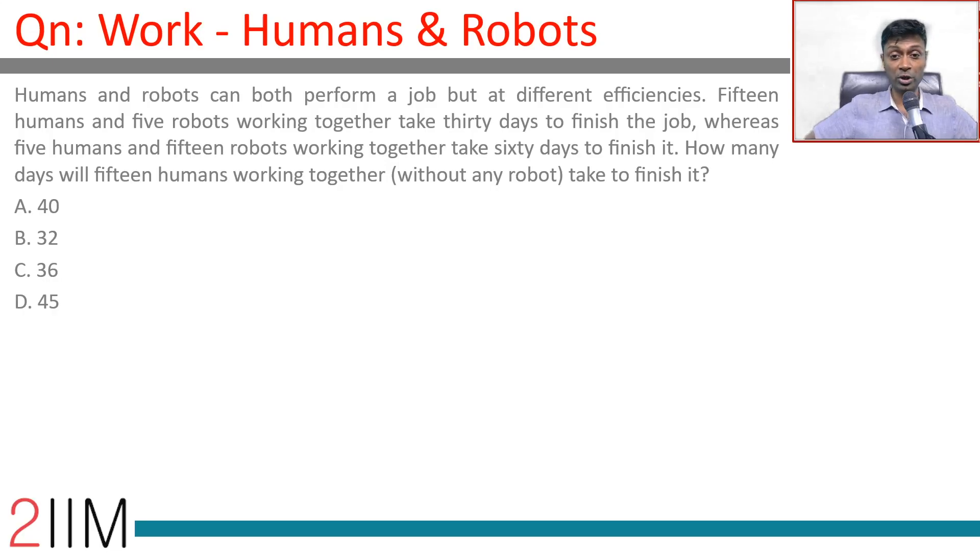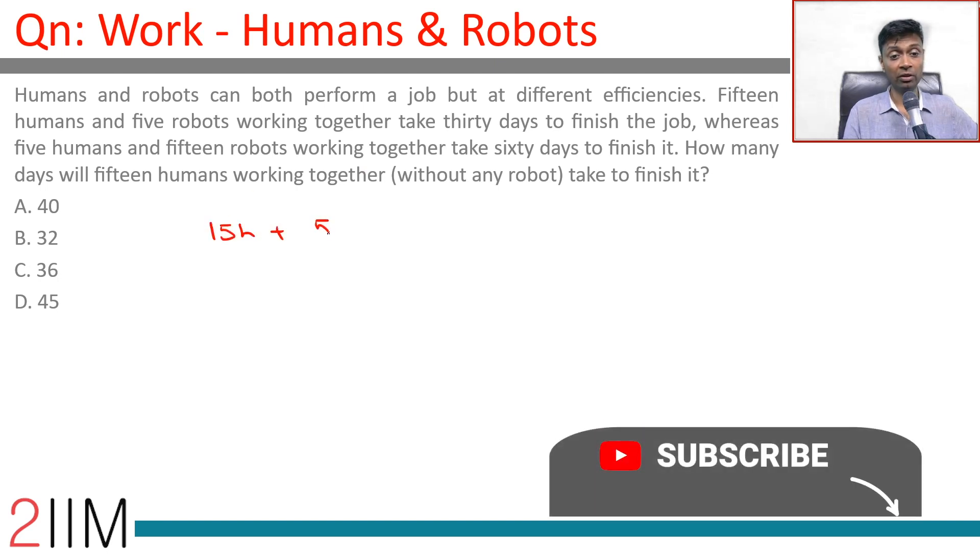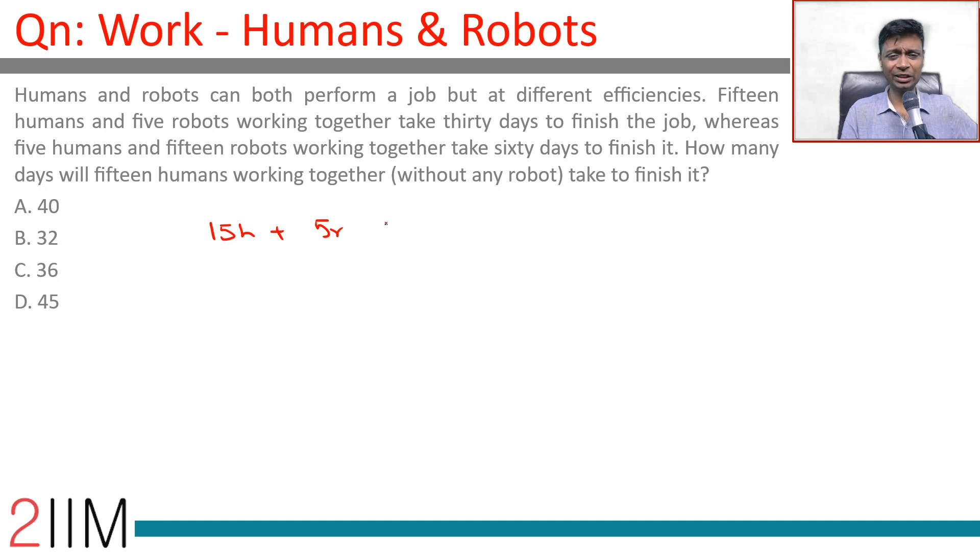Humans and robots can both perform a job but at different efficiencies. You can imagine that 15 humans and 5 robots working together take 30 days to finish a job.